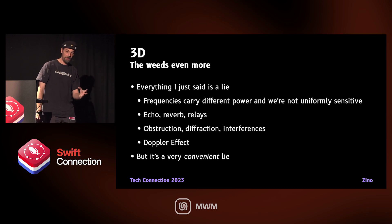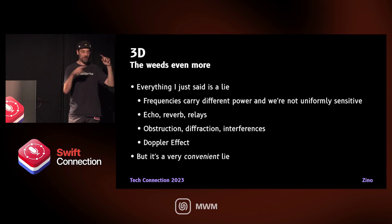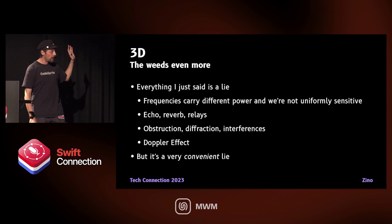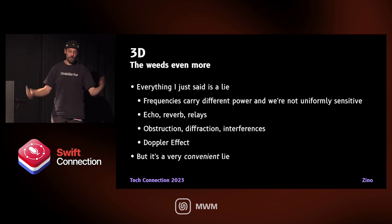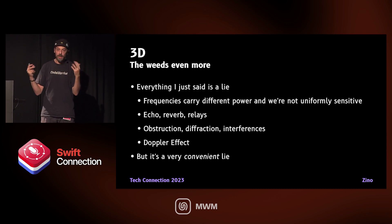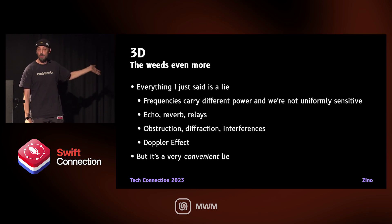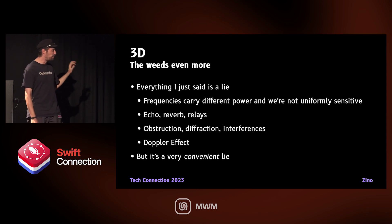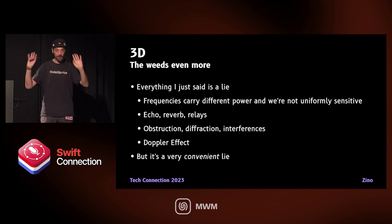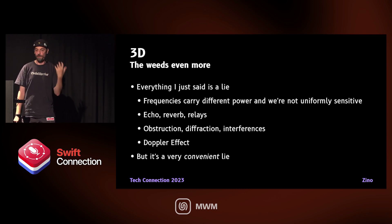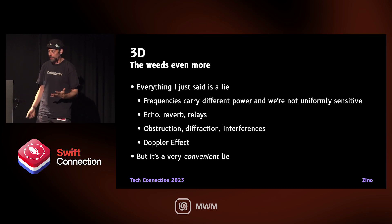Different frequencies carry different power and we're more sensitive to some frequencies than others, so the inverse square law doesn't work for every frequency — you have to figure out which law to use for which part of the spectrum. You also have to take into account echo, reverb, and interference. If you want to roll your own, you even have to take into account the Doppler effect — a sound coming towards you is higher pitched than one going away. The math is actually pretty hard, so please don't use that. Use inverse square law and a little bit of trig and you'll be fine. If you try to make it too realistic, the sound will actually sound fake, which is worse than simulating it simply.